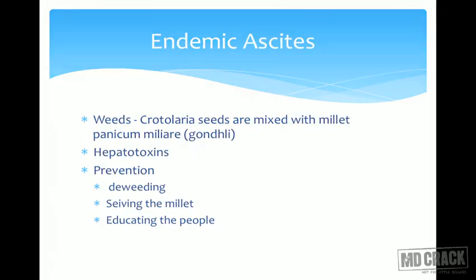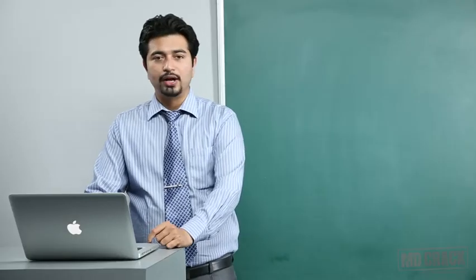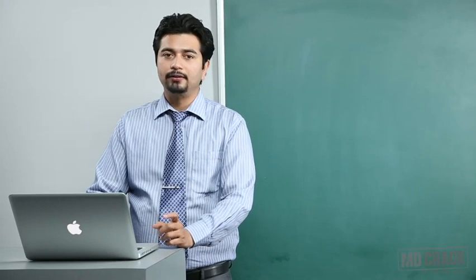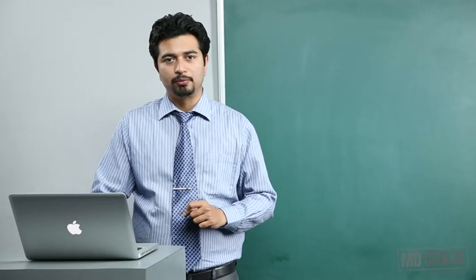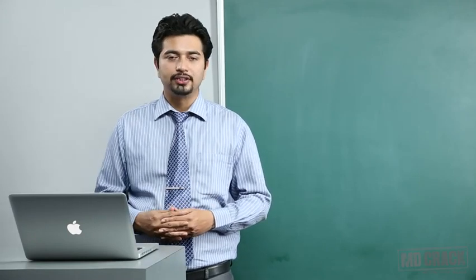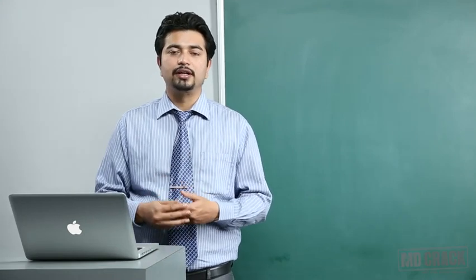Endemic ascites is caused by weeds — Crotalaria seeds get mixed with millet (gondli) and are very difficult to separate. If consumed together, they cause endemic ascites. The toxin secreted is hepatotoxic. Prevention involves deweeding, sieving the millet to filter out Crotalaria seeds, and educating people about the problem. Massive ascites can result, with a potentially very high fatality rate.